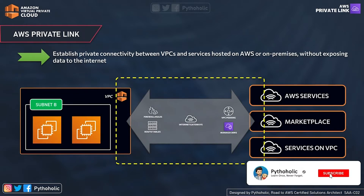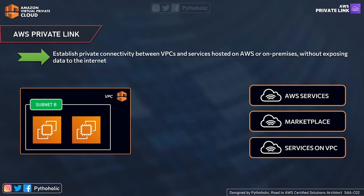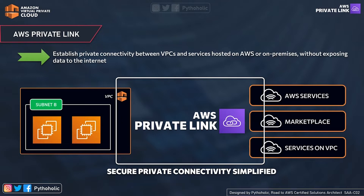Let's introduce ourselves to a service called AWS Private Link. This helps us establish private connectivity between VPCs and services hosted on AWS or on-premises without exposing data to the internet. AWS Private Link uses a private endpoint to talk to services across other accounts and VPCs without being exposed to the public internet. Traffic between your VPC and the services does not leave the Amazon network — that's secure private connectivity, simplified.